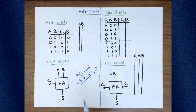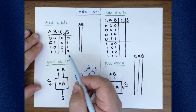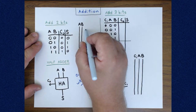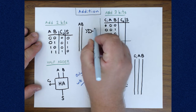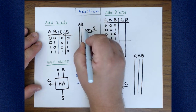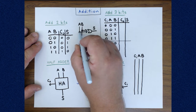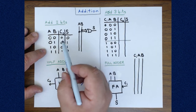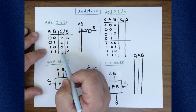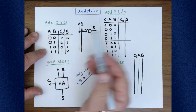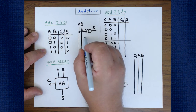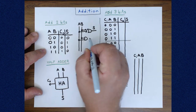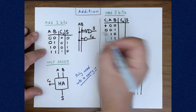Looking at the sum column, we can see very quickly that this is exclusive OR. So to make a circuit for the sum, we just use an exclusive OR gate. By exclusive ORing A and B we have the two-bit sum. For the carry, the output column is 0, 0, 0, 1 — that's just an AND gate. So we introduce an AND gate between A and B, and that produces the carry out.